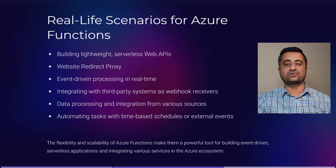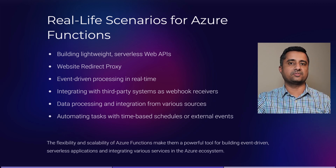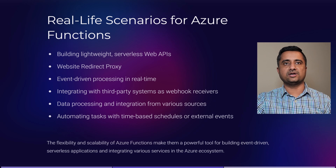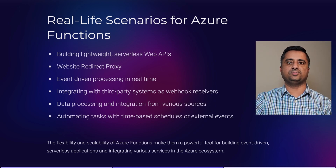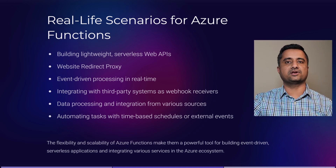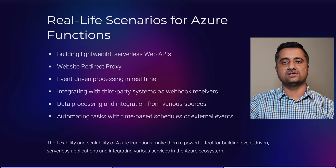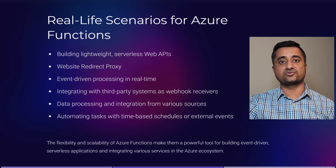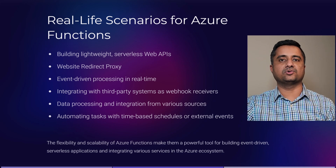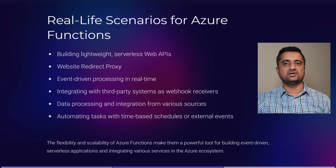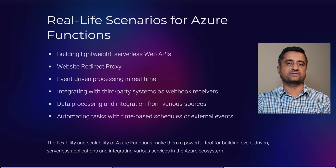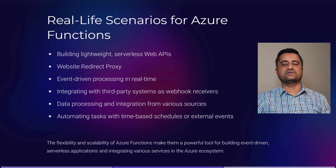The second use case is the website redirect proxy. That is something common I've used, where you want a particular domain that has to be HTTPS, but you don't want to host it on an IIS and have a site configured and everything. Azure Function Apps comes in very handy when you want to build vanity domains. You will have an HTTPS domain attached to it, and then you are just redirecting traffic to a particular site.